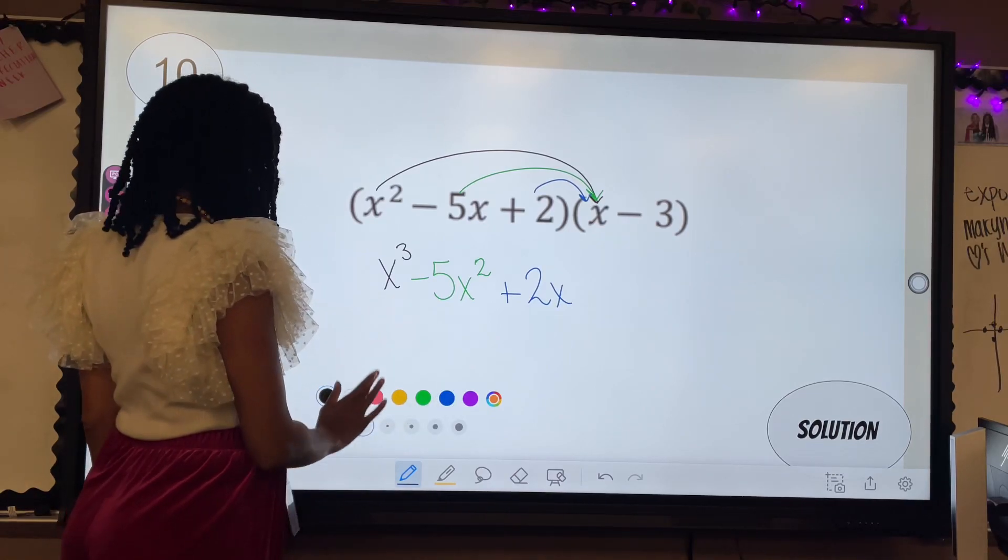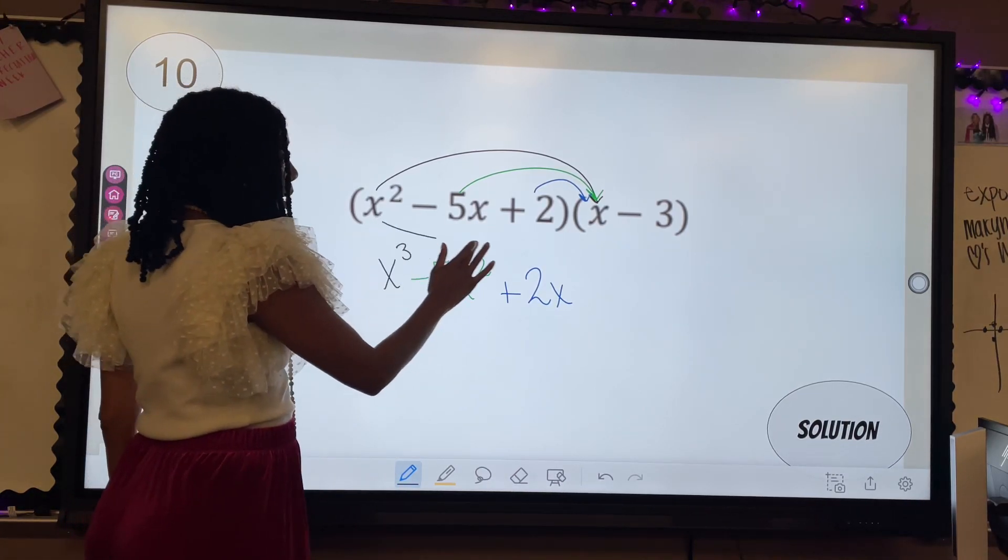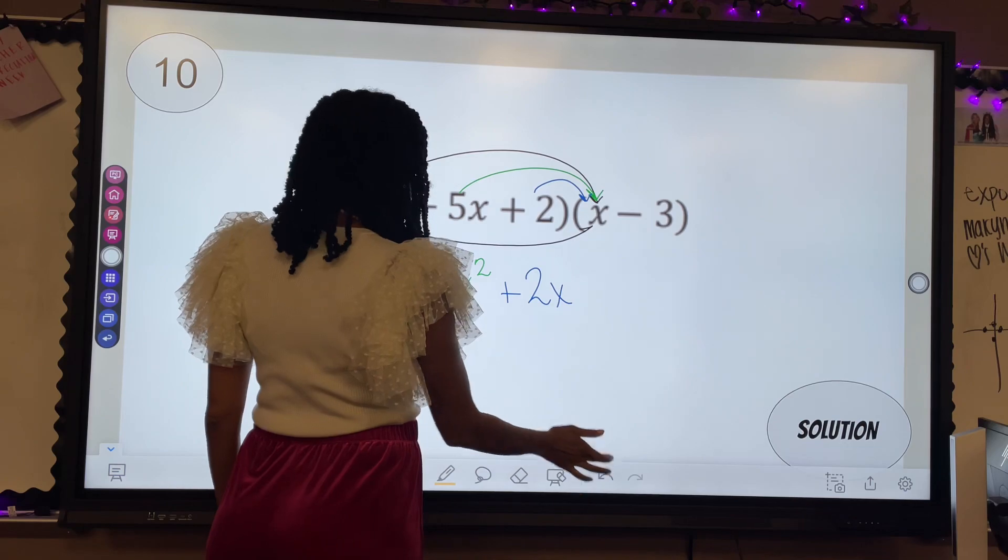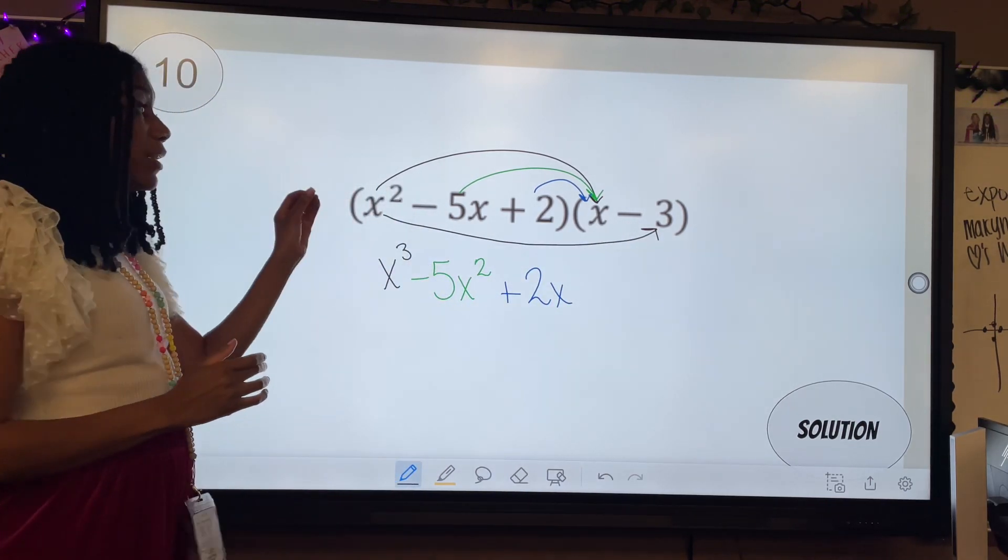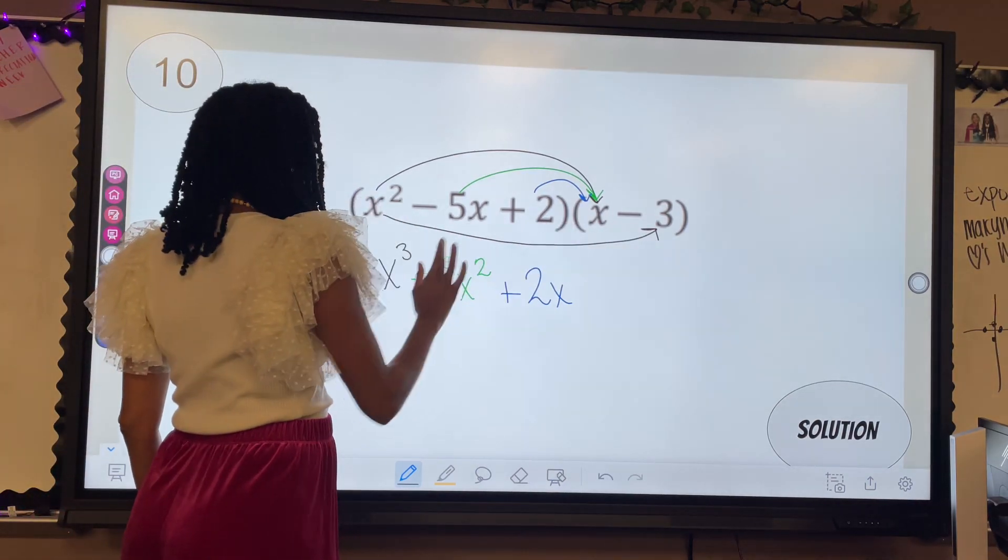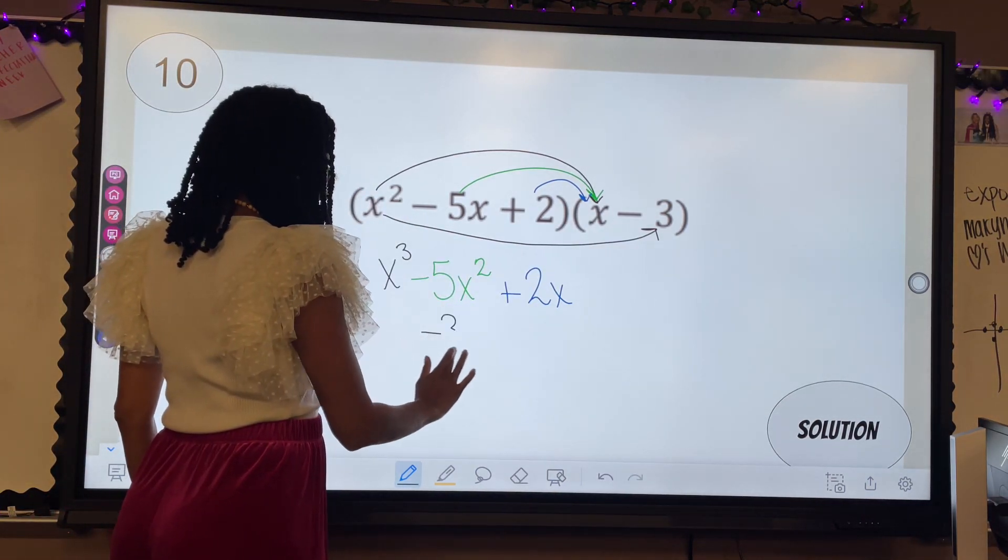So I'm going to do x squared times negative three. And I'm going to line it up. That is negative three x squared, which I'm going to put right here.